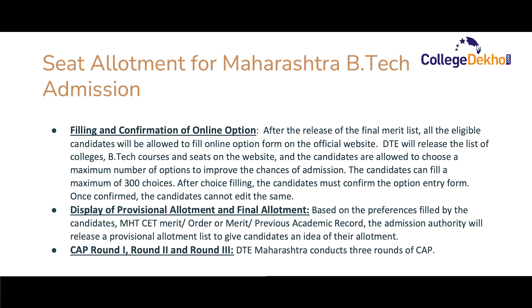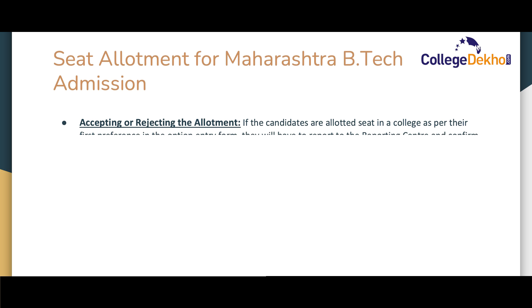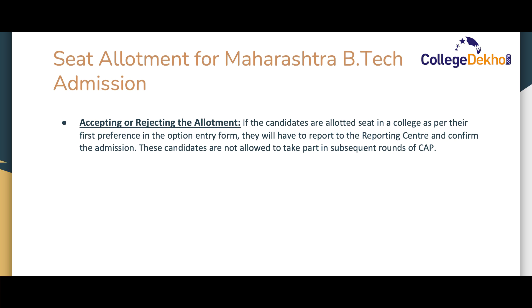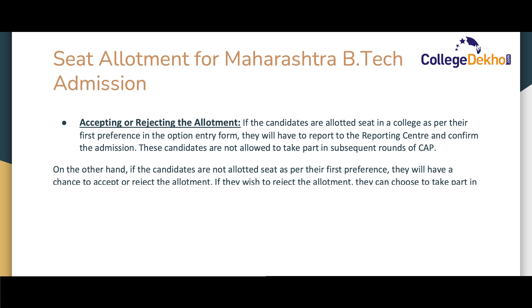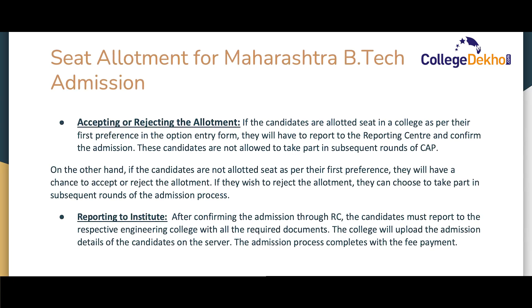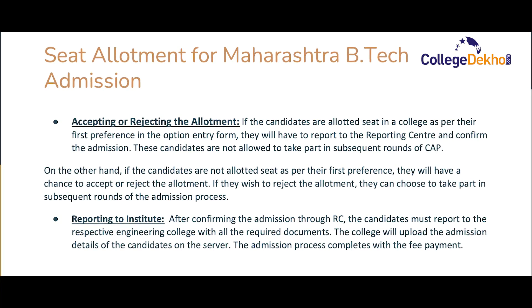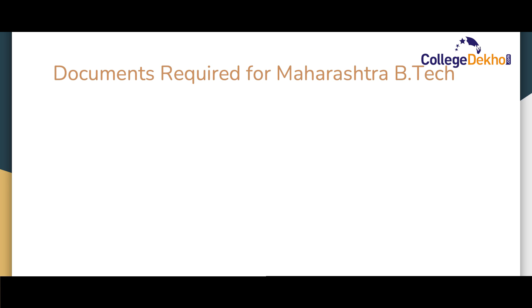The next step is CAP Round 1, Round 2, and Round 3 — the three rounds of Maharashtra B.Tech admission counseling. If candidates are allotted a seat as per their first preference, they must report to the reporting center and confirm their admission. They will not be allowed to participate in subsequent rounds after accepting their allotment. If candidates are not allotted seats as per their first preference, they can accept or reject the allotment. If they reject, they can participate in subsequent rounds of the admission process. The last step is reporting to the institute: after confirming admission, candidates must report to the respective engineering college with all required documents. The college will upload the admission details on the server, completing the admission process after fee payment.